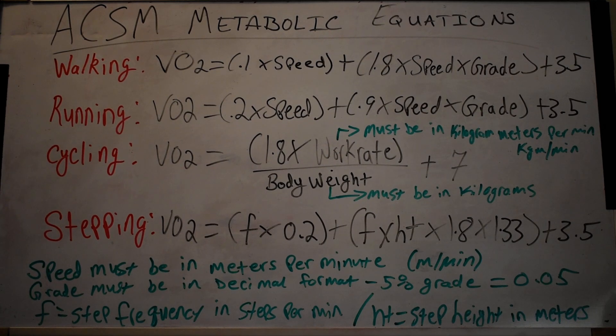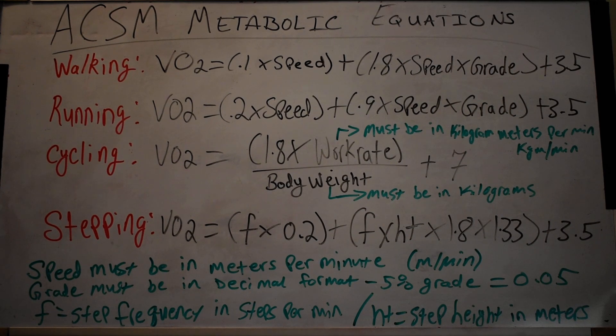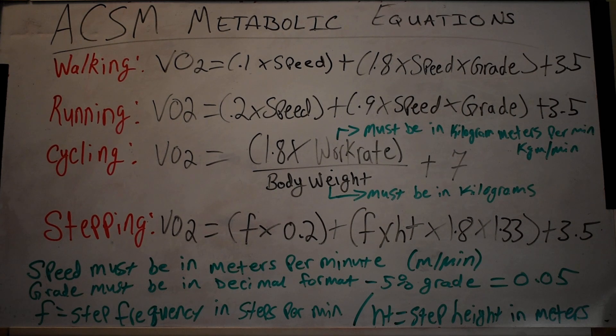Of course, VO2 is cardiac output times arterial-venous oxygen difference, and cardiac output can be defined as heart rate times stroke volume. So we can tell a lot just by VO2. It gives us a lot of physiology that we can go off of. If VO2 is going up, is it because stroke volume has gone up or because the VO2 difference has increased? That's a discussion for a different day.